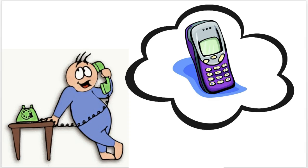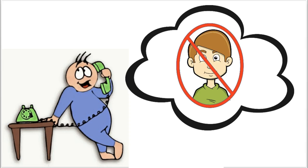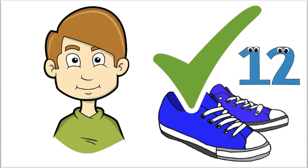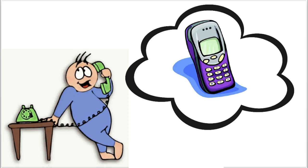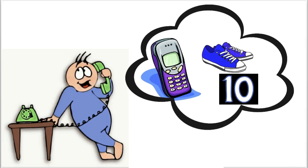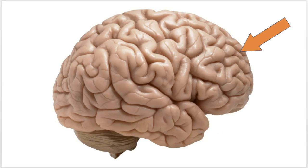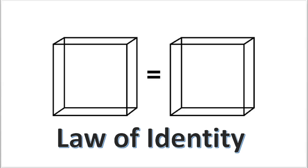For example, you knew that the person on the phone was not your uncle Adam, because there was one thing that is true about your uncle Adam — he wears a size 12 — that is not true of the person on the phone. So if you ever want to know if one thing is identical to another thing, the only thing you have to do is use the law of identity. Since we want to know if mental states are the same thing as brain states, we will have to use the law of identity.